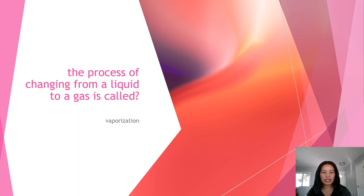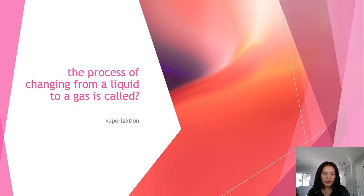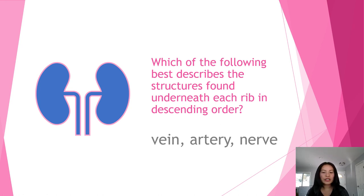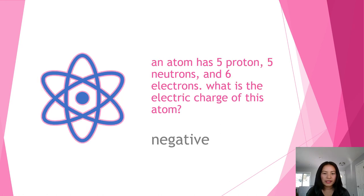Now we're going to review the flashcards. The process of changing from a liquid to a gas is called vaporization. The structures found underneath each rib, in descending order, are vein, then artery, then nerve.